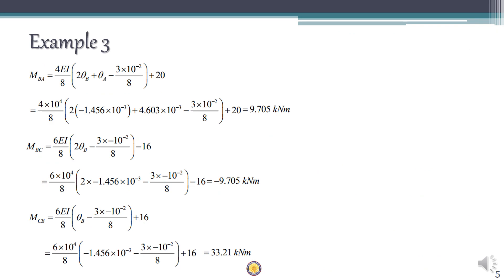Once θ_A and θ_B are found, substitute back into the slope deflection equations. MAB is a simply supported moment so it is zero. MBA is calculated as 9.705, which is an anticlockwise moment since the sign convention treats active anticlockwise as positive. MBC can also be calculated, and from these values you can find reactions and draw the bending moment diagram.